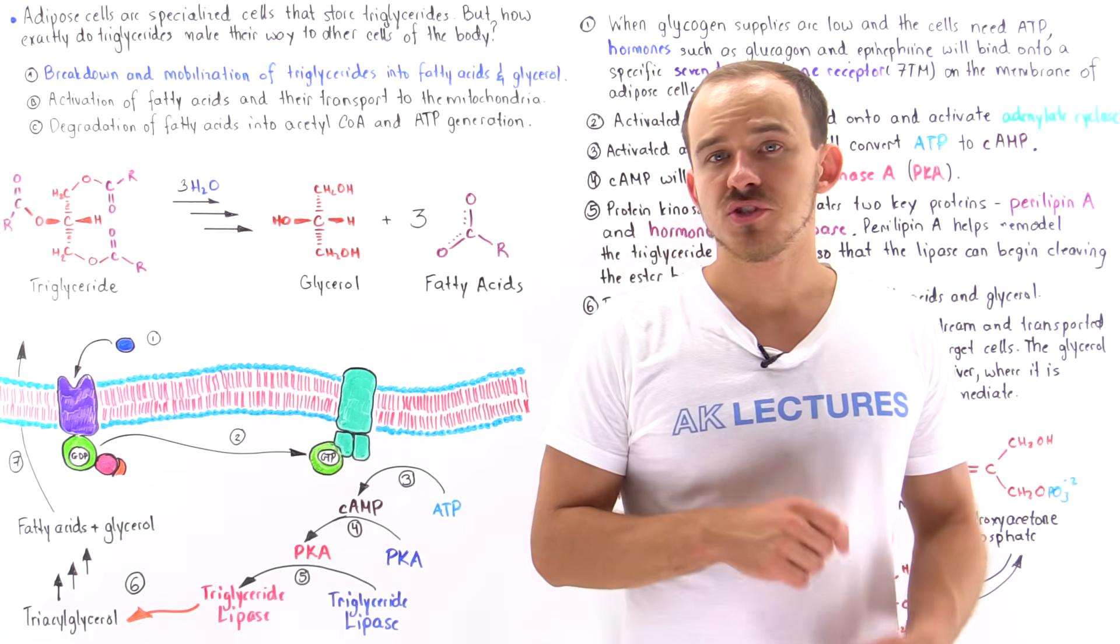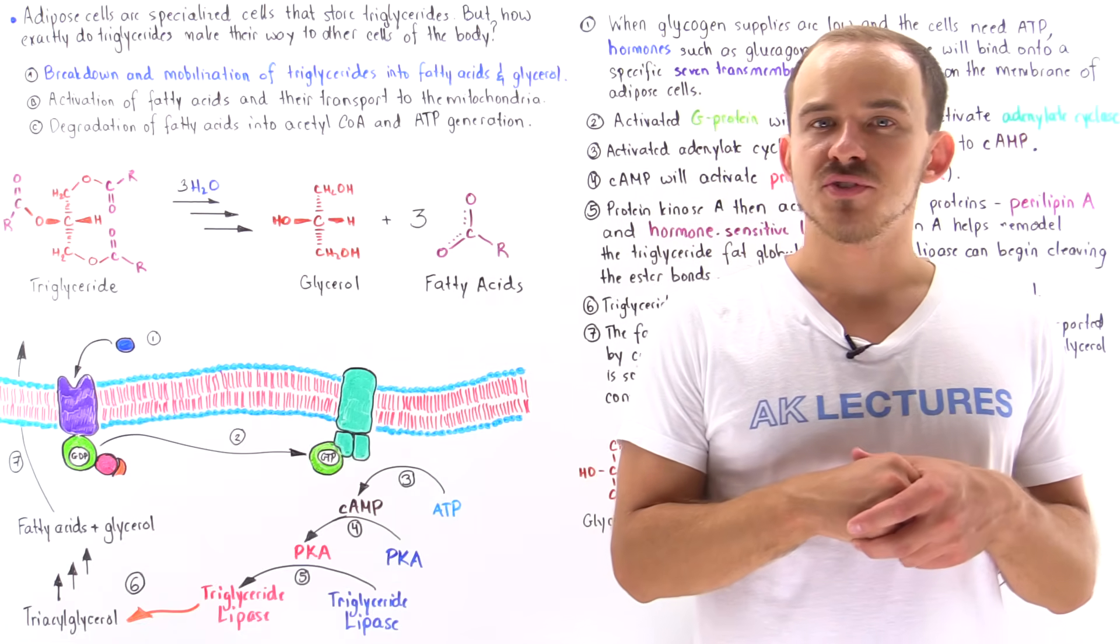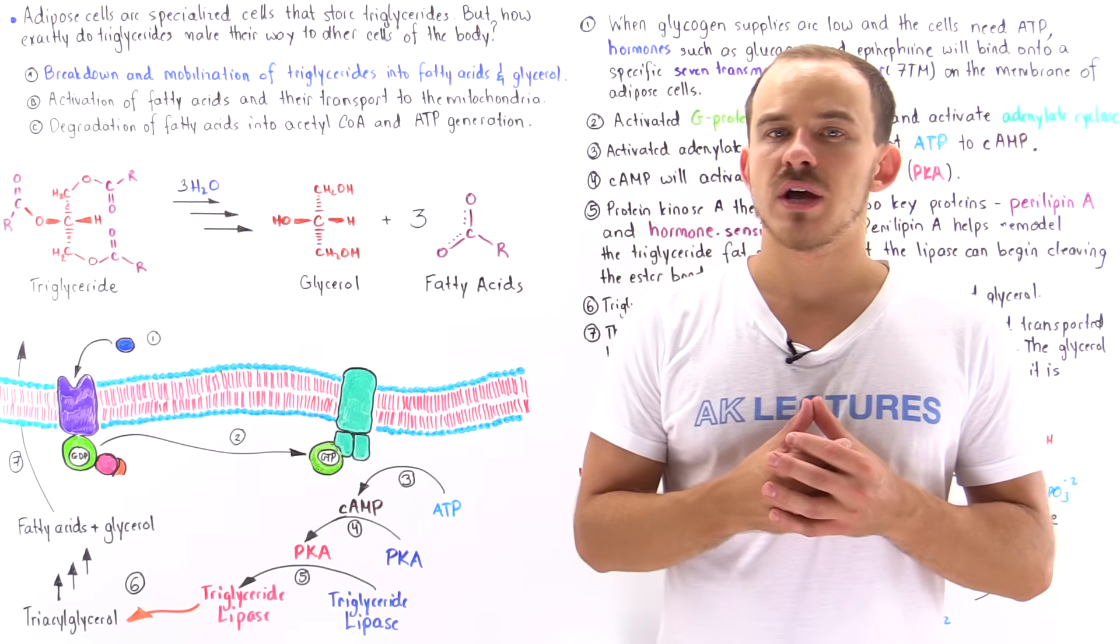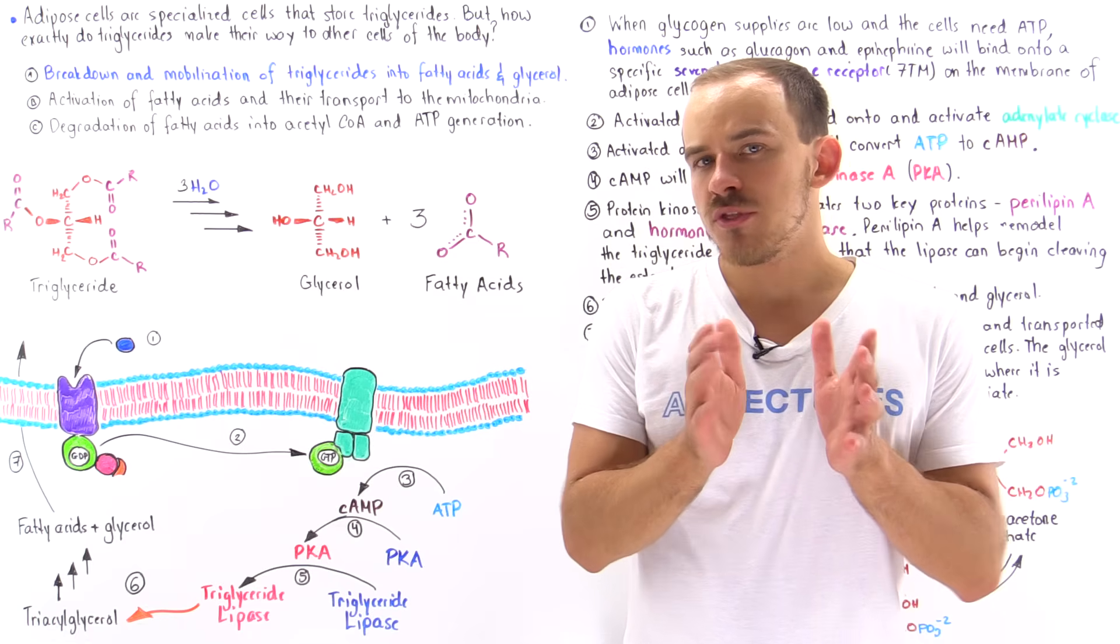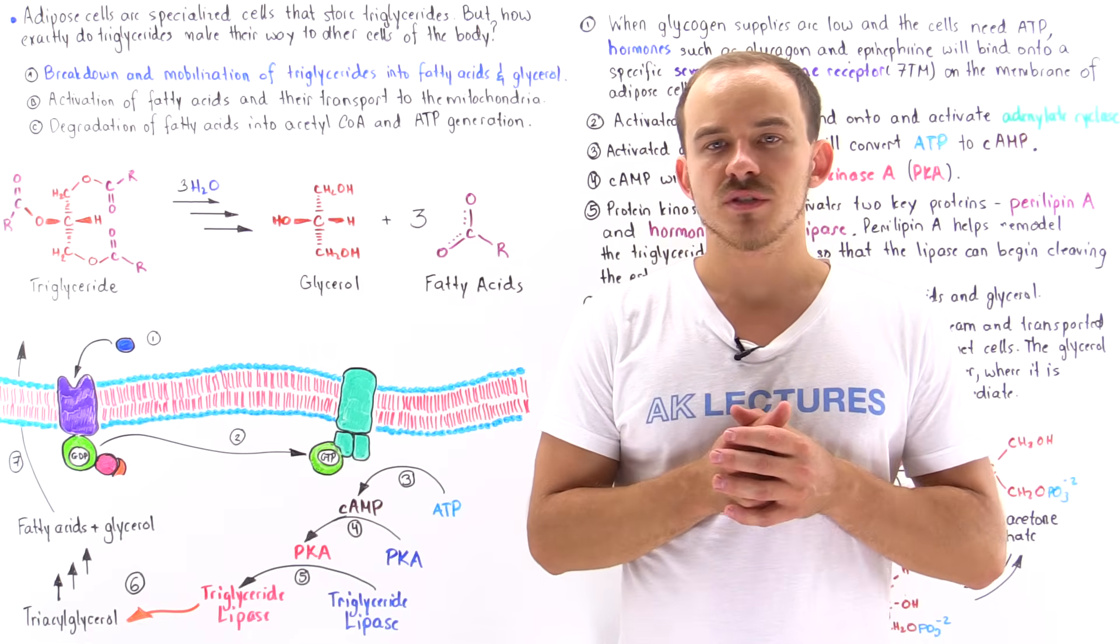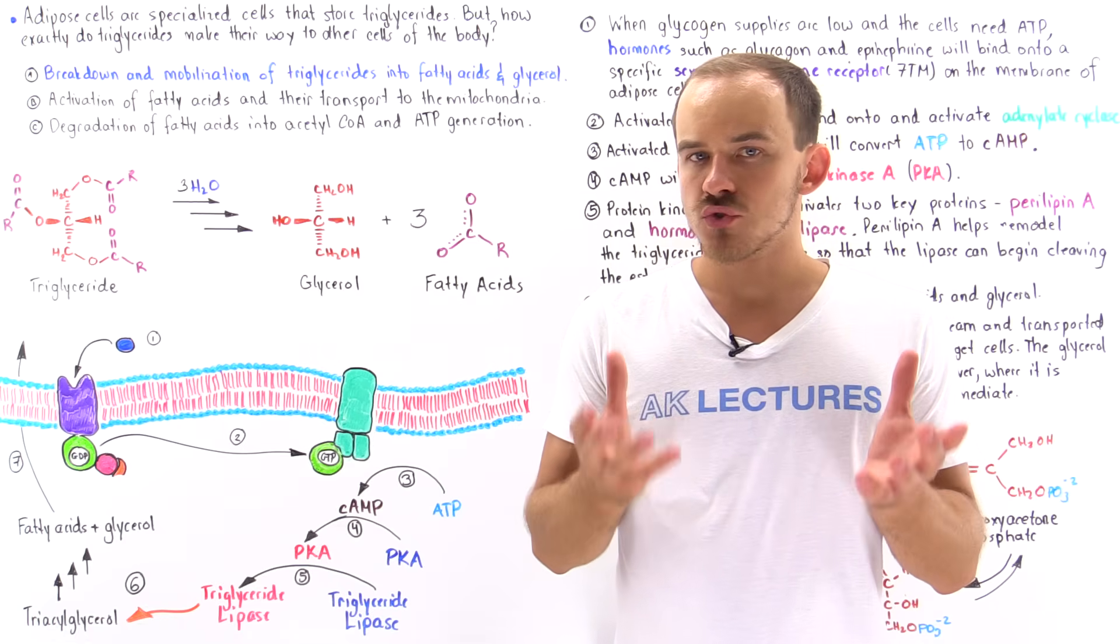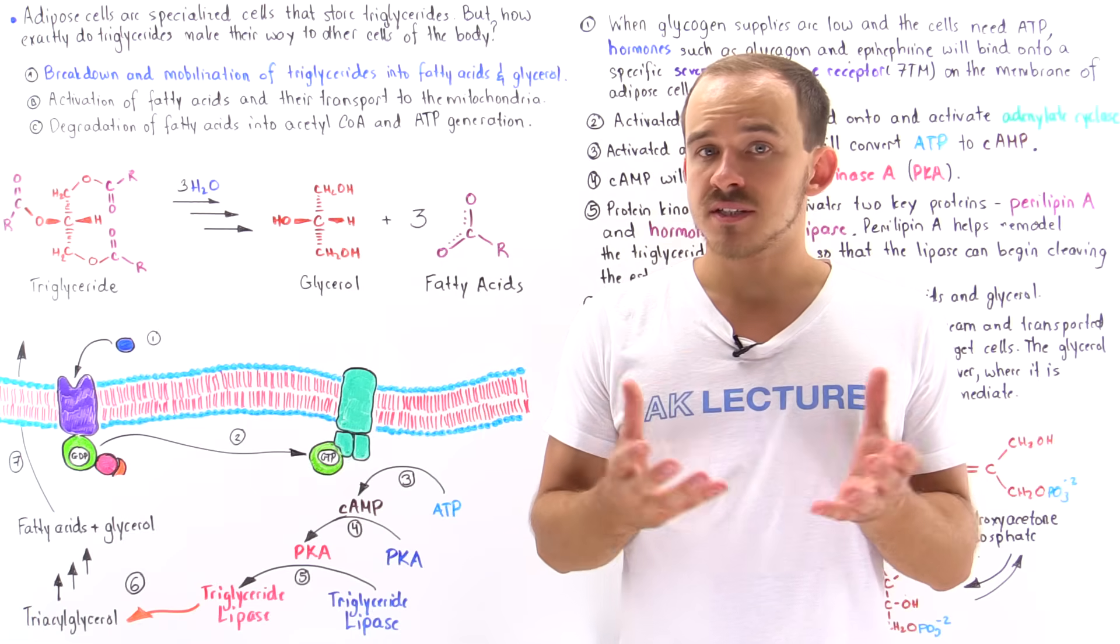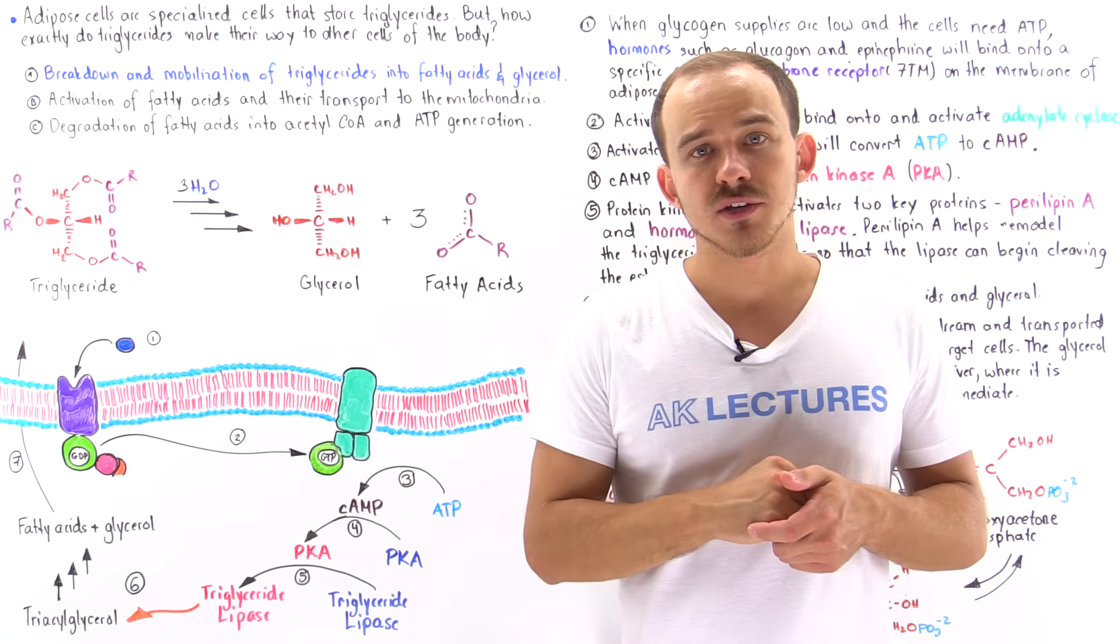Inside our body, we have specialized cells known as adipose cells that function to store fatty acids in their triglyceride form. If we look within the cytoplasm of these adipose cells, we'll find large structures known as fat globules. These fat globules consist entirely of individual triglyceride molecules.